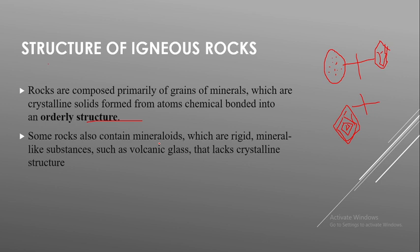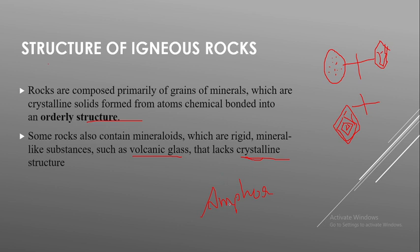Some rocks also contain mineraloids, which are mineral-like substances but are not pure minerals. They may include volcanic gases that lack crystalline structure. Some igneous rocks may contain volcanic gas, which can cause a loss of crystalline structure. There are also some amorphous (partial crystal) structures. So the various types of structures we observe in igneous rocks arise from a combination of minerals, mineraloids, and chemical bonds.